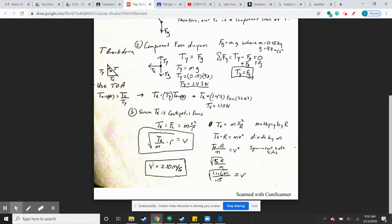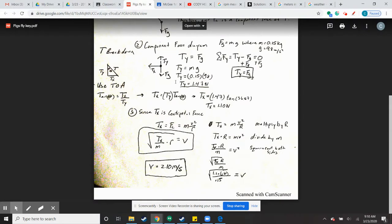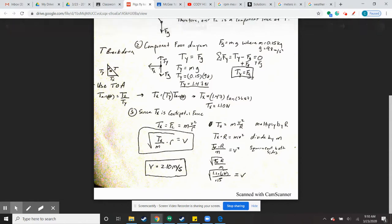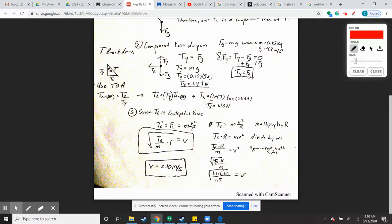Our component diagram shows that Ty and Fg are opposing each other. Since the pig's not falling on the ground, we can assume that Ty and Fg are equal. If you want to break it down, you can.